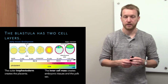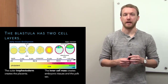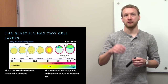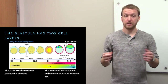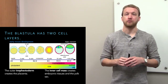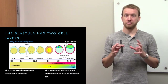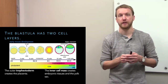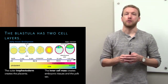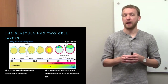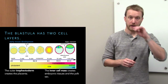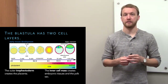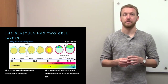We begin life as a single cell — the zygote — which goes through a few rounds of cell division to form a morula, then continues dividing to form a blastula: a hollow ball of cells. The outer trophectoderm forms the placenta, while the inner cell mass forms everything else — all embryonic tissues plus the yolk sac that feeds the embryo until the placenta is established.